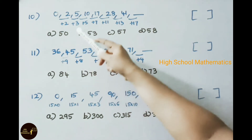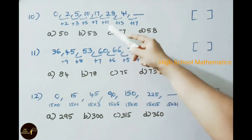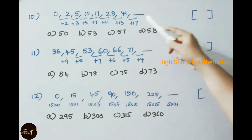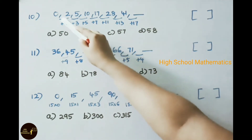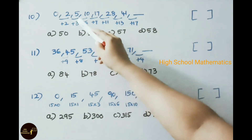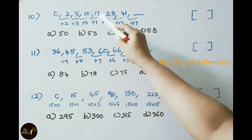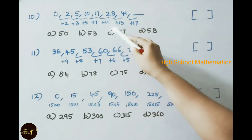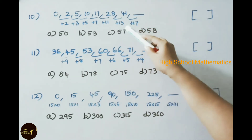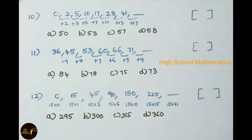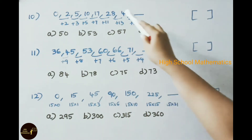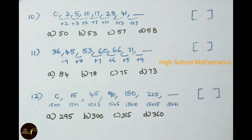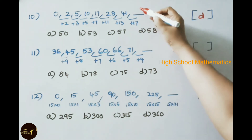Tenth practice problem: 0, 2, 5, 10, 17, 28, 41 — find the next term. It is a prime series used as differences: 0 plus 2 is 2, 2 plus 3 is 5, 5 plus 5 is 10, 10 plus 7 is 17, 17 plus 11 is 28, 28 plus 13 is 41. The added numbers are prime numbers: 2, 3, 5, 7, 11, 13. The next prime is 17, so 41 plus 17 is 58. The answer is option D, 58.